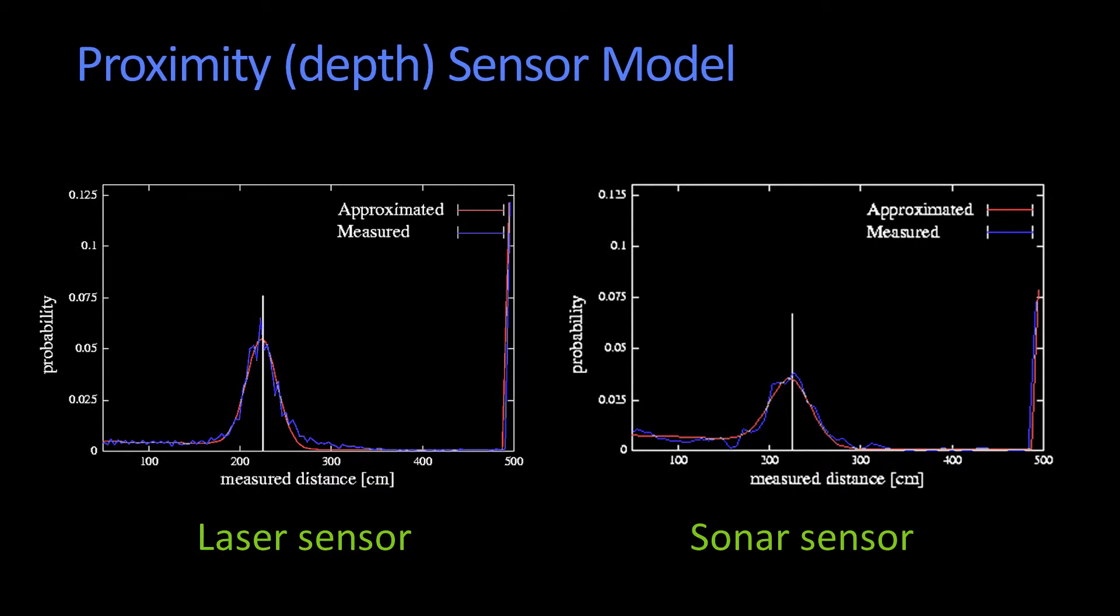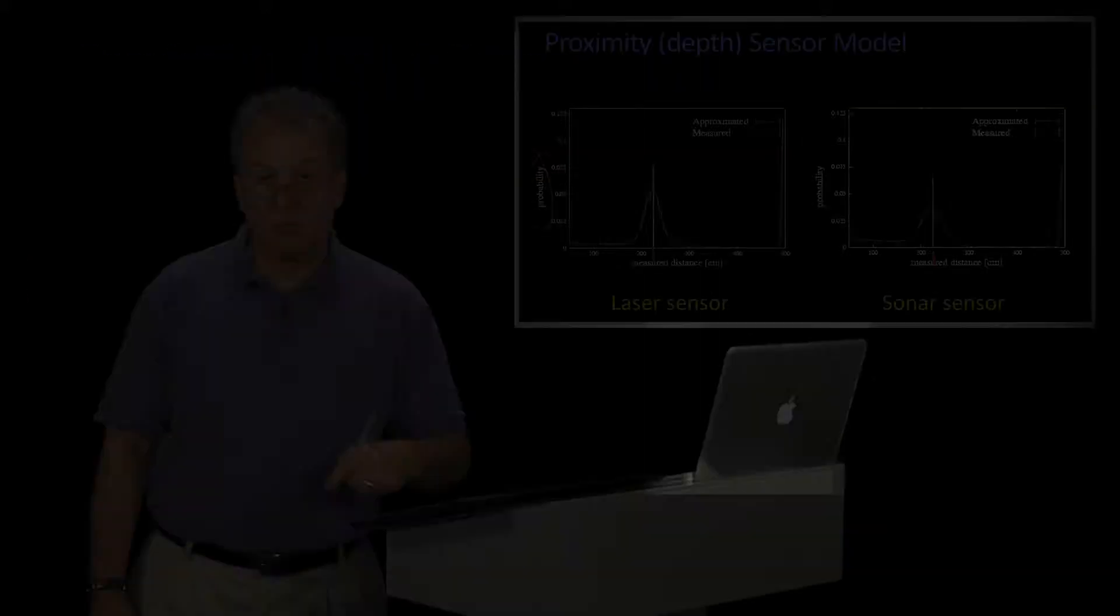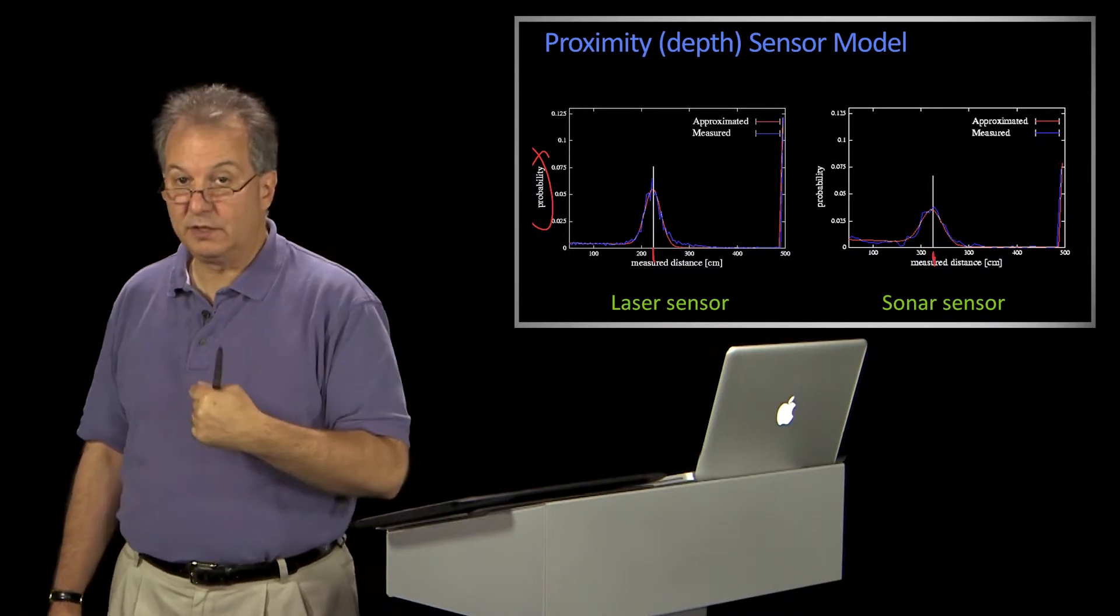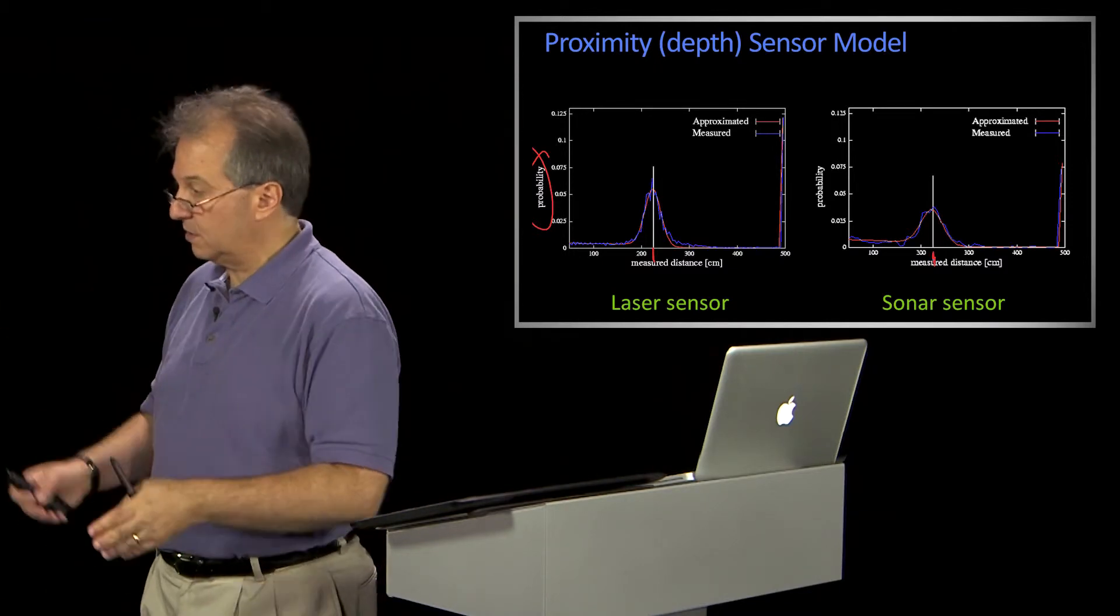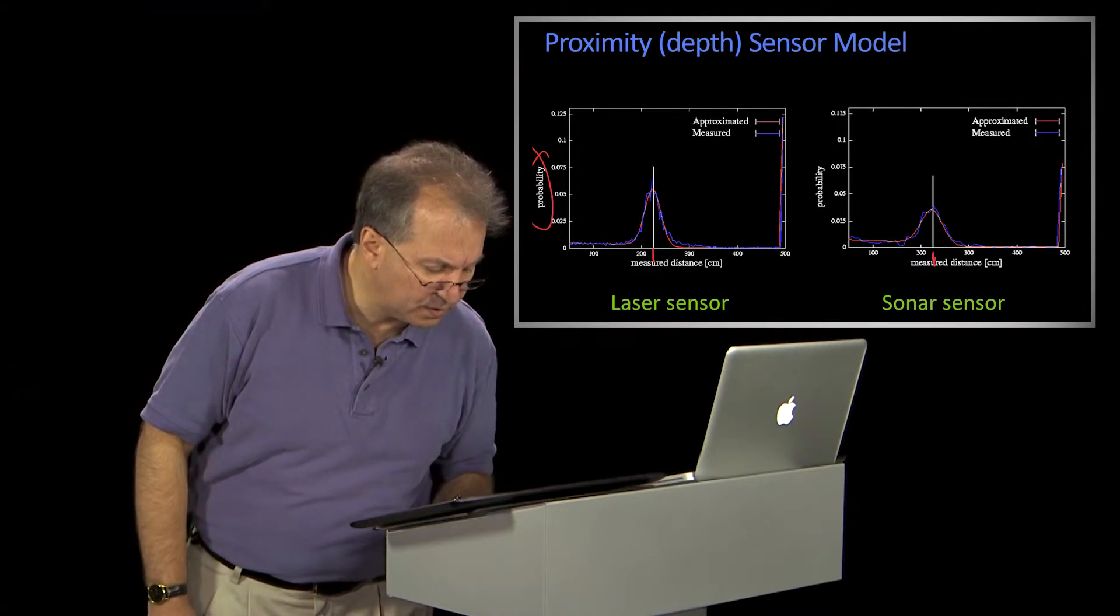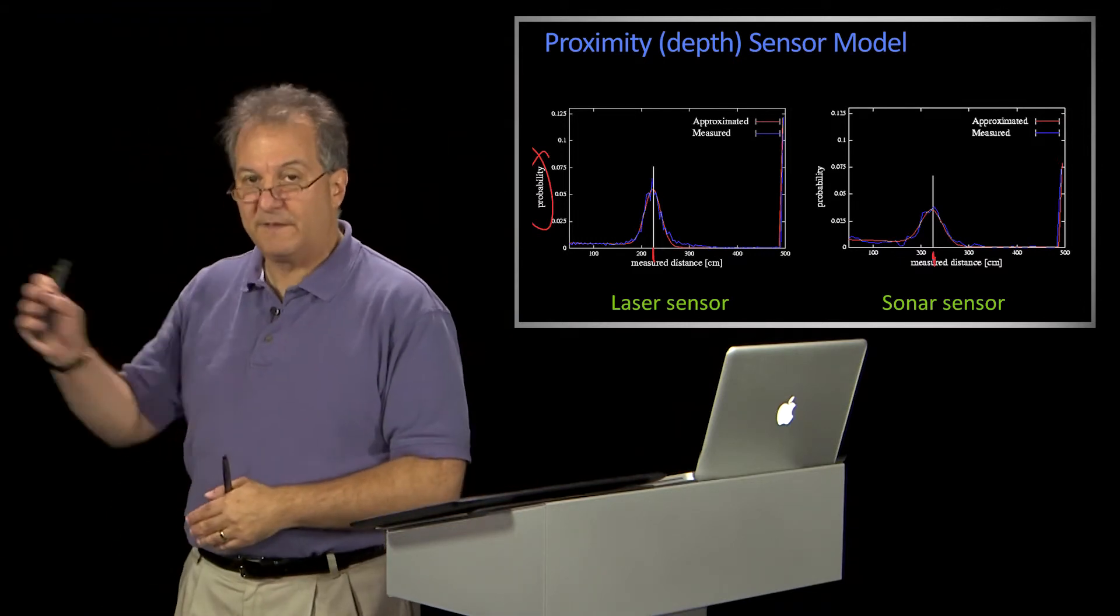So here's a picture of a sensor model. What this is, is the probability of getting a particular measurement if, let's say, the actual state was here on this black line, okay? And what was nice is when you're using a real robot, you can actually measure the likelihood. So you stick the sensor, you know, three meters away or, let's see, that's centimeters, so 2.3 centimeters away from the wall.